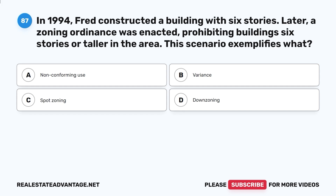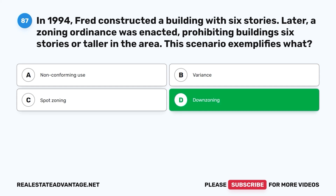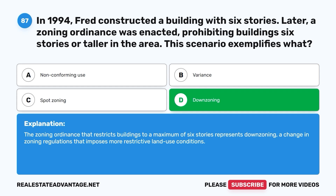Question 87: In 1994, Fred constructed a building with six stories. Later, a zoning ordinance was enacted prohibiting buildings six stories or taller in the area. This scenario exemplifies what? A. Non-conforming use. B. Variance. C. Spot zoning. D. Down zoning. The correct answer is D, down zoning. The zoning ordinance that restricts buildings to a maximum of six stories represents down zoning — a change in zoning regulations that imposes more restrictive land use conditions.